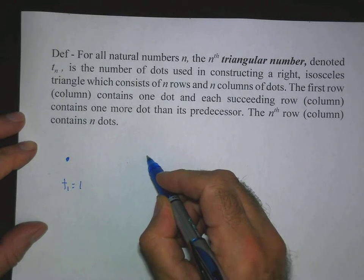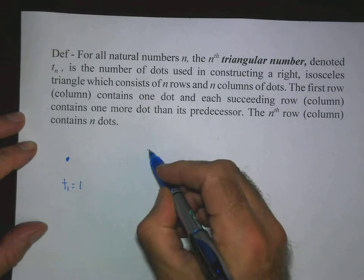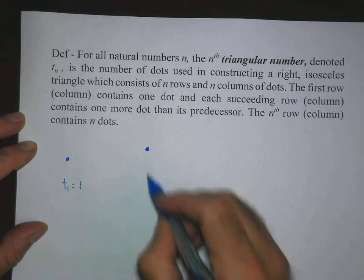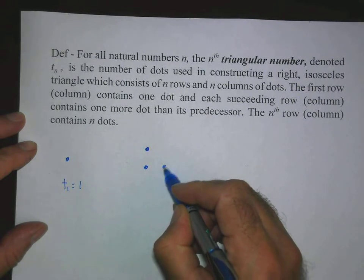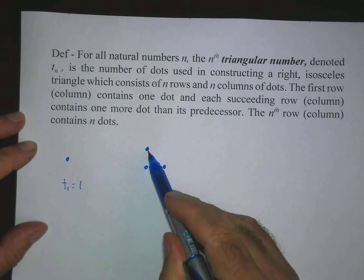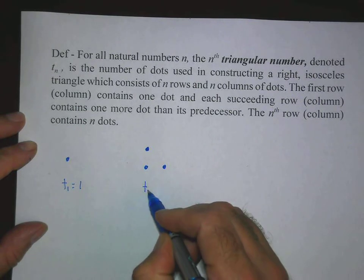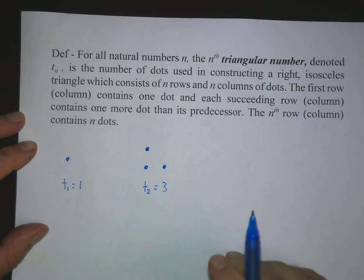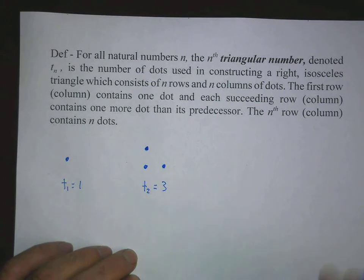Let's just work inductively — more illuminating as we go on. The first row or first column has one dot, and then each succeeding row has one dot more than its predecessor. So row 1, row 2. This triangle contains three dots. So that's the second triangular number.